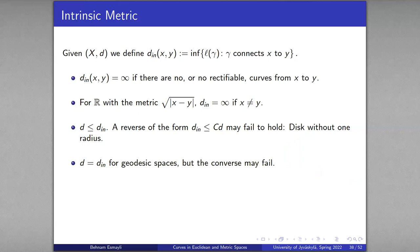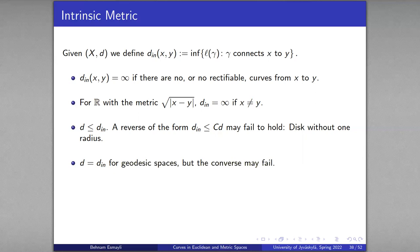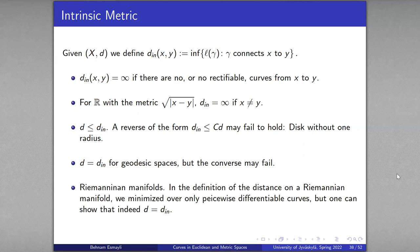In a geodesic space, by definition, for every two points x and y there is some curve whose length equals the distance. Placing that curve into the infimum definition shows the infimum is achieved, so d_intrinsic equals d. The converse may fail — we'll see an example on the next slide — meaning a space can satisfy d = d_intrinsic without being geodesic. Riemannian manifolds provide an important example where d equals d_intrinsic, because the Riemannian distance was already defined as the infimum of lengths of piecewise C¹ curves.